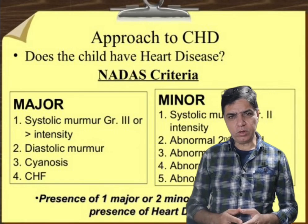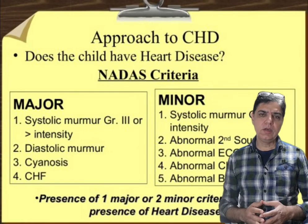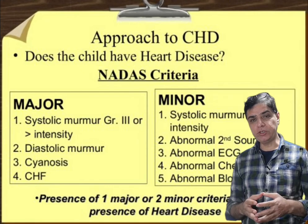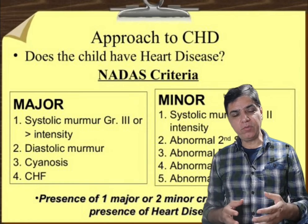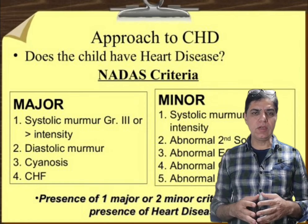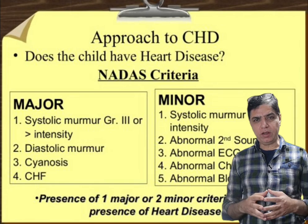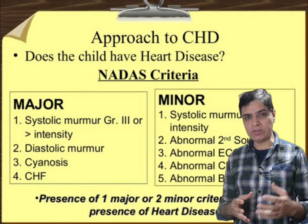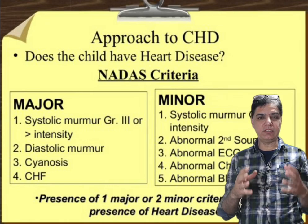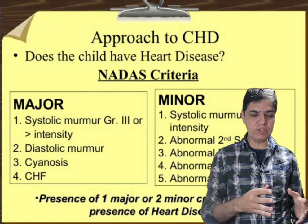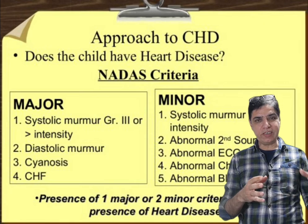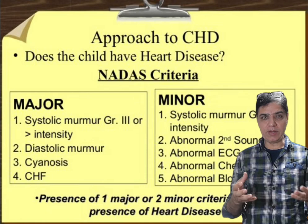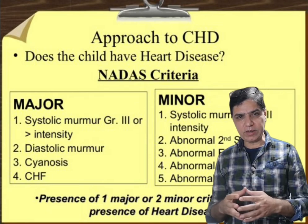Hello my friends. Today we are going to talk about the NADA's criteria. NADA's criteria is a criteria which is used in the pediatric population to screen children for the presence of heart disease. The issue with heart disease is that sometimes it can be very difficult to diagnose. So NADA's criteria is basically a screening criteria which helps the pediatrician to filter out those kids who might have the possibility of an underlying heart problem, which might be congenital or acquired.